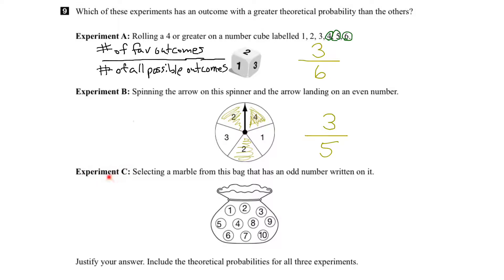Let's look at experiment C. We're selecting a marble from the bag and we want to get an odd number. What are all the possibilities? In the bag there are 10 marbles, so there are 10 options that are equally likely — that represents all the possible outcomes. Now how many are odd? Counting through: 1, 2, 3, 4, 5 — the rest are even. So there are 5 ways to get the outcome we want: an odd marble.